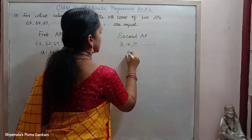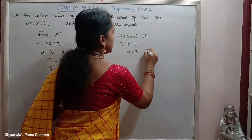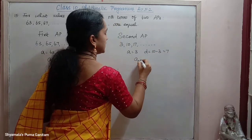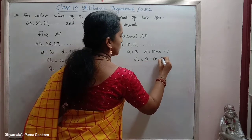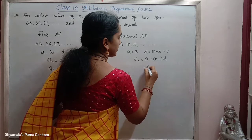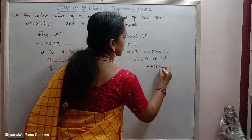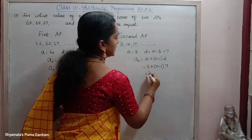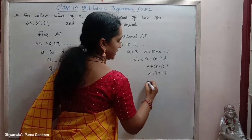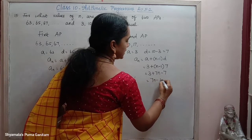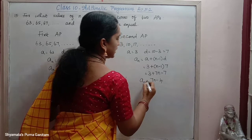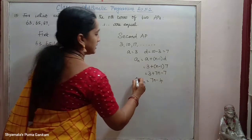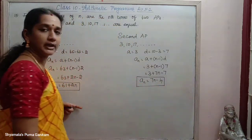For the 2nd AP, A is equal to 3 and D is equal to 10 minus 3, that is equal to 7. So AN equals A plus N minus 1 into D, which gives 3 plus N minus 1 into 7. This equals 3 plus 7N minus 7, so AN is equal to 7N minus 4.